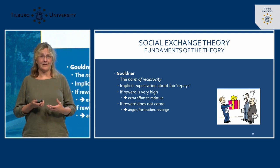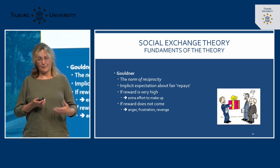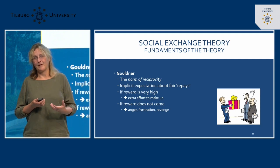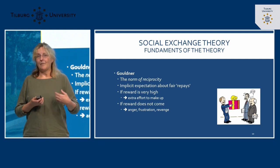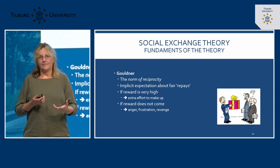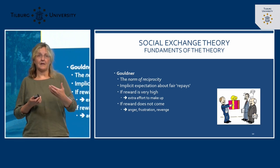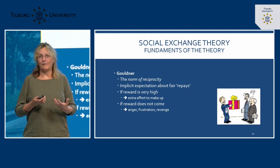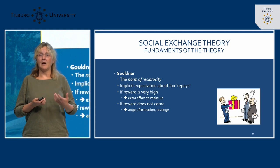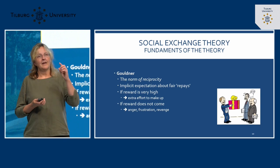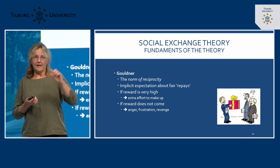This also explains why individuals become frustrated if the return is not there or is much smaller than expected. For example: you make a big fuss for a birthday hoping your best friend comes, because last time you brought them a big gift. If they don't show up, there is an imbalance — the norm of reciprocity is damaged, the relationship is harmed, and people feel it's unfair and may seek revenge.